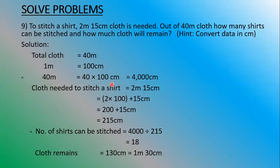How much cloth is needed to stitch one shirt? That is 2m 15cm. Here also, meters are given, so we multiply 2 by 100 to get 200cm, and then add the 15cm given. So 2×100 = 200cm plus 15cm — that is 215cm of cloth needed to stitch one shirt.